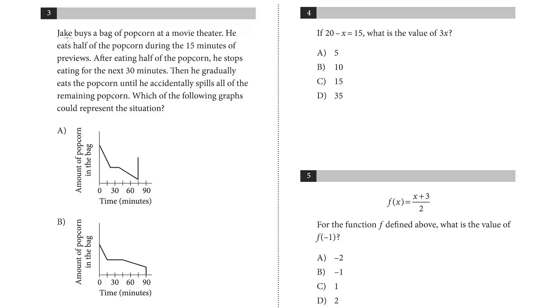Problem 3. Jake buys a bag of popcorn at a movie theater. He eats half of the popcorn during the first 15 minutes of the previews. After eating half of the popcorn, he stops eating for the next 30 minutes. Then he gradually eats the popcorn until he accidentally spills all of the remaining popcorn. Which of the following graphs could represent the situation? This is just like the last two problems we did.